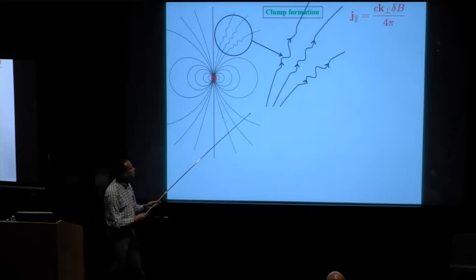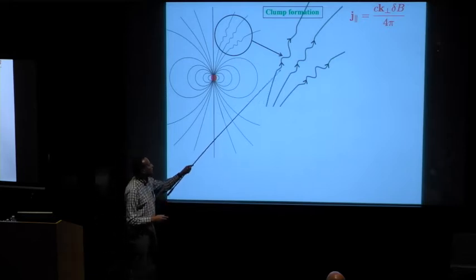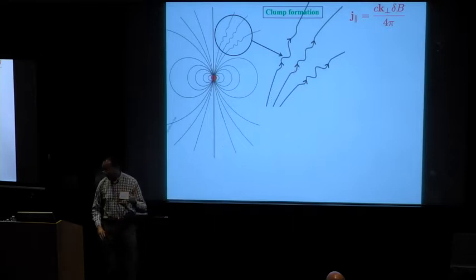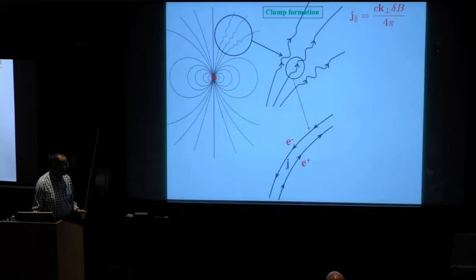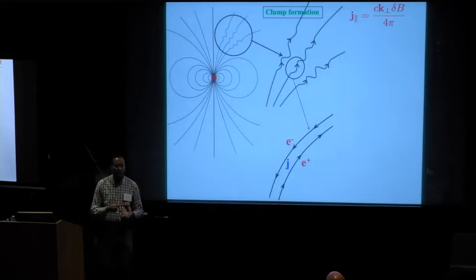That current is being carried by electrons and positrons moving in opposite directions, and at a high clip, at some fair fraction of the speed of light, at least a few percent, more like 10 percent of the speed of light.